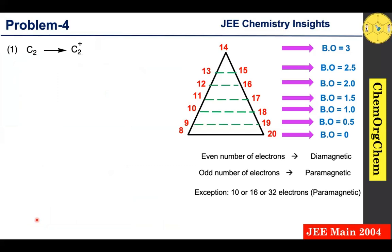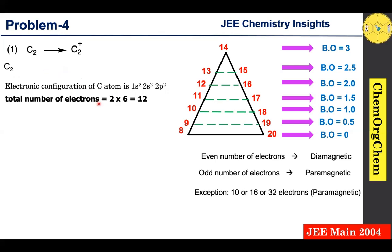For C₂, we write the electronic configuration of carbon: 1s² 2s² 2p². The atomic number of carbon is 6, and there are two carbon atoms, so the total number of electrons is 12. Since 12 falls in the range 8–20, we use the second diagram. From the diagram, a molecule with 12 electrons has a bond order of 2.0.